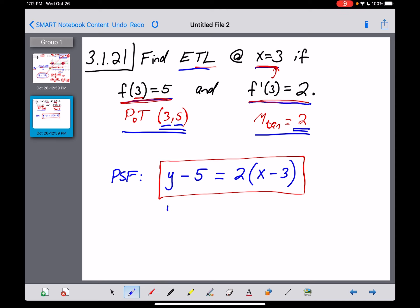So, two steps. We're going to distribute that 2 here. y minus 5 is equal to 2x minus 6, and then we'll add 5 on the left and add 5 on the right. And we'll end up now with our answer in slope-intercept form of y equals 2x minus 1. And that's the answer I'm pretty sure that they have in the back of the book.